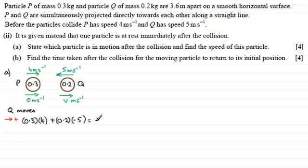And this is going to be equal to the momentum of P after impact, well because it's got no velocity its momentum will be 0. So all we've got then is the momentum of Q which is its mass 0.2 multiplied by the velocity v which is in the positive sense.